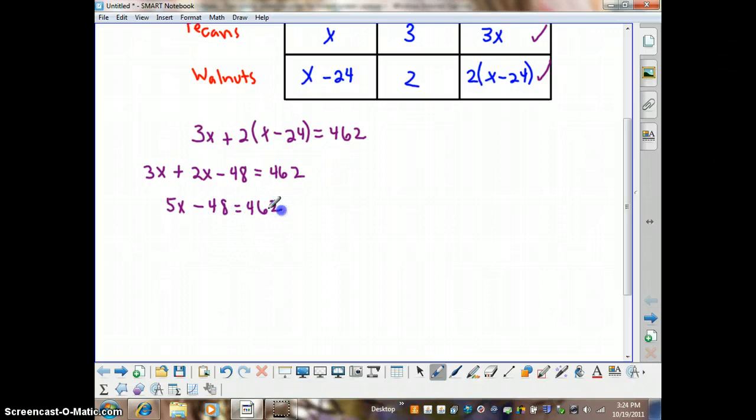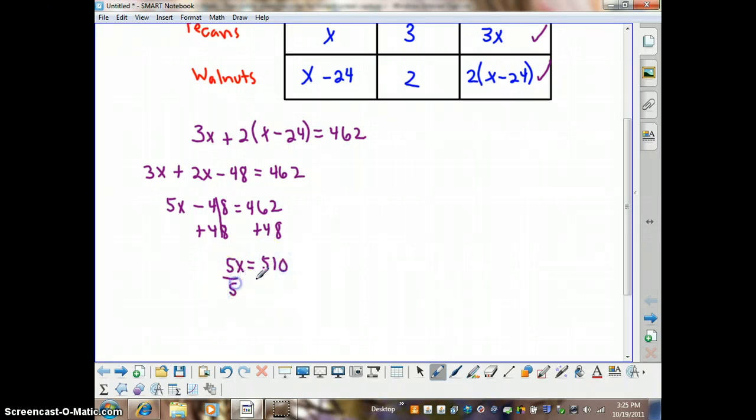And then to get x by itself, we're going to undo the subtracting 48 by adding 48 to both sides of the equation. And then we'll have 5x left on the left-hand side. 5x equals 510. And then we'll divide both sides by 5. And we get that x is 102.